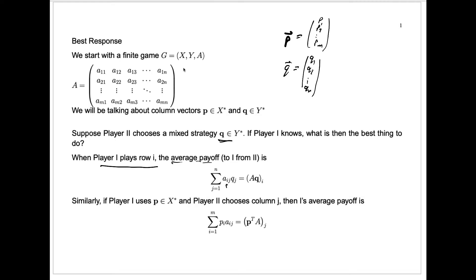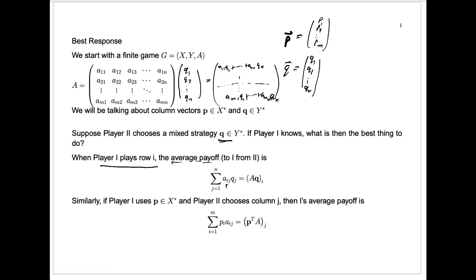If we take A and multiply it by Q — which is Q1, Q2, up to Q sub N — then taking the first row dot product with that column gives A11*Q1 plus all the way up to A1N*QN in the first entry, going all the way down to AM1*Q1 plus up to AMN*QN. So the product A times Q gives us this vector, and the entry in row i is exactly the expected return if player one plays row i.